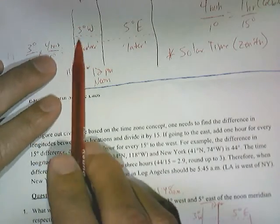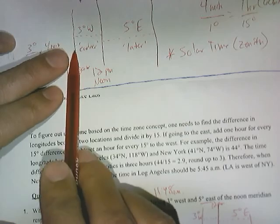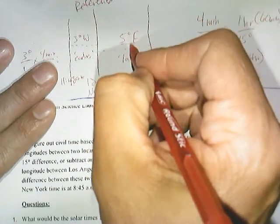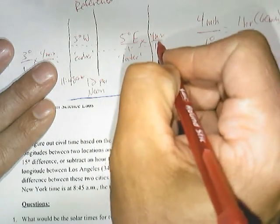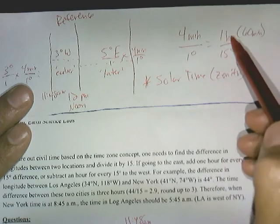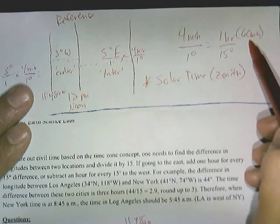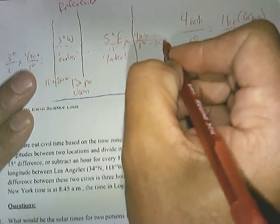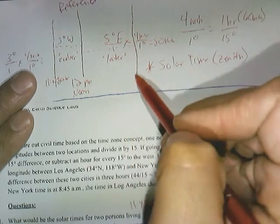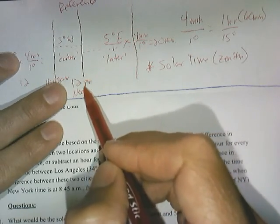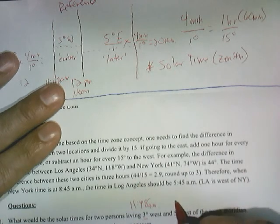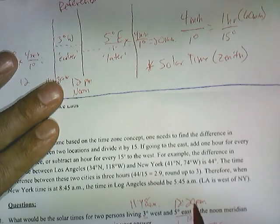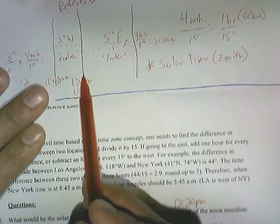It's earlier here because it has not reached the zenith yet. Whereas five degrees east — I take the same idea, times four minutes per one degree. Five times four is 20 minutes. Because it's east of the noon meridian, it's going to be 20 minutes after noon. So it's going to be 12:20 p.m. solar time — the zenith has already passed.